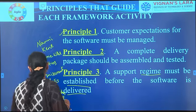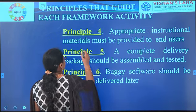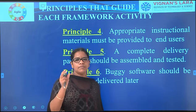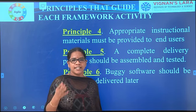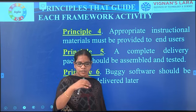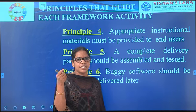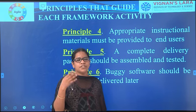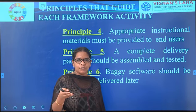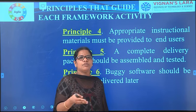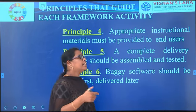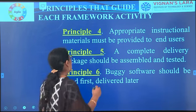The fourth principle is: 'Appropriate instructional materials must be provided to the end users.' When you buy phones, TVs, or fridges — any electronic goods — you get a manual. The manual gives directions such as how to remove the battery or insert a SIM card. Instructions are provided so the user takes care of the product properly. If misused and the product doesn't work, the user will blame the developer — that is why instructional manuals are issued.